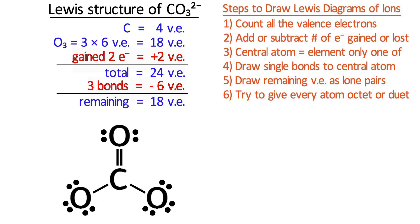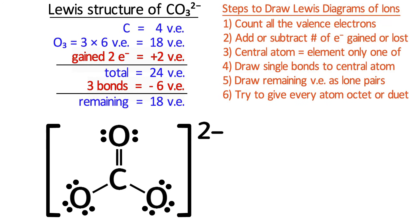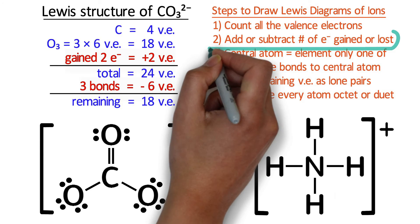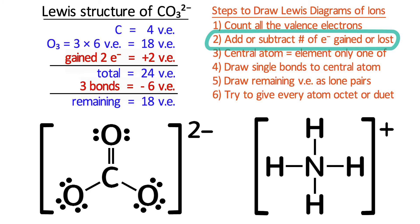We can indicate that this is a polyatomic ion by putting brackets around it with the overall charge in the top right. As we sit back and reflect on the Lewis structure of ammonium carbonate, notice that the entire procedure is the same as drawing the Lewis diagram of a molecule except for this step. The only difference is adjusting the number of valence electrons according to the charge.